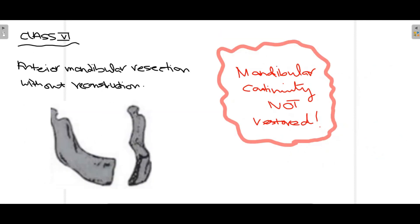Class 6 is when the anterior mandible is resected without reconstruction. Unlike Class 5, there is no reconstruction performed. The left and right parts of the mandible remain but the anterior part is missing and is not replaced. Mandibular continuity is not restored — there is discontinuity present — and this is Class 6 of Canter and Curtis's classification of mandibulectomy.